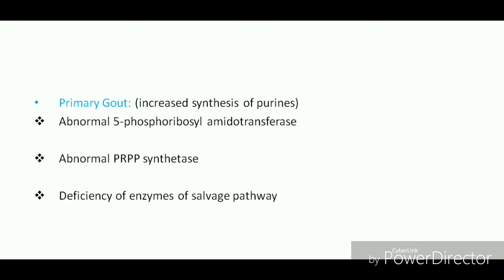Another enzyme is glucose-6-phosphatase deficiency. Due to this deficiency, glucose-6-phosphate cannot be converted into glucose — this is the enzyme of glycogenolysis. Glucose-6-phosphate accumulates and is diverted into the HMP pathway, where more ribose is synthesized. Ribose is used for PRPP synthesis, increasing purine production. Increased purines undergo degradation, leading to increased uric acid. These are the reasons for primary gout.